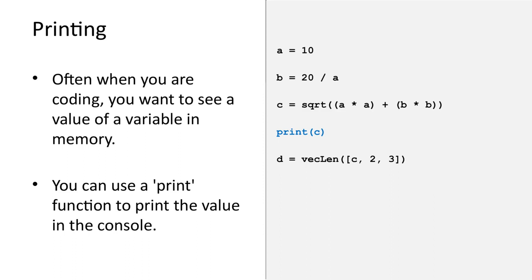In the example code, let's say that you want to see the value of the variable c. You can then insert an extra line of code to print c. Executing the code would display the value of c in the console.